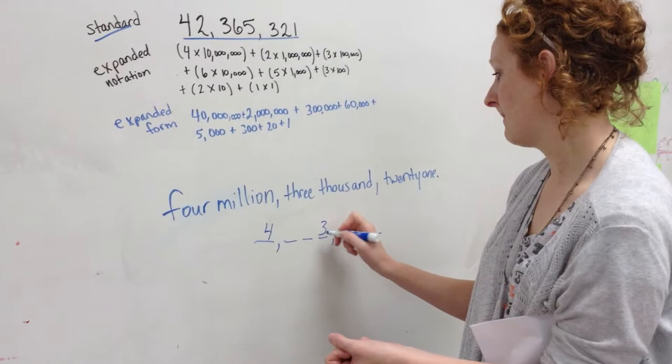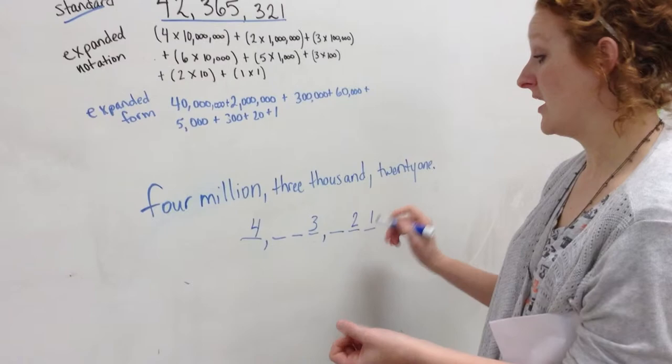Three thousand. So I go back to my thousands place and I put my three, and twenty-one, so I put my twenty and my one.